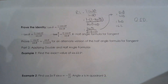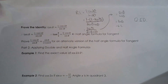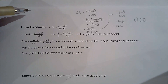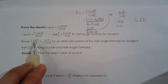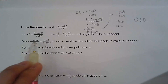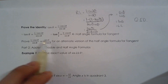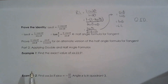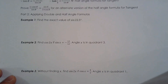QED — the identity is proven. This also proves the half angle formula for tangent: tan(θ/2) = (1 − cosθ) / sinθ. There is also an alternative version: tan(θ/2) = sinθ / (1 + cosθ). Proving this alternative version would be a great homework question. Both are valid versions of the half angle formula for tangent.